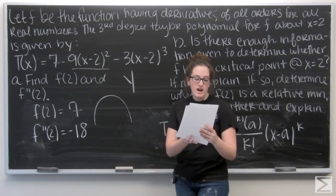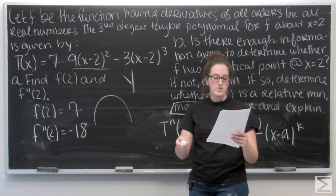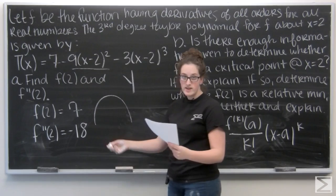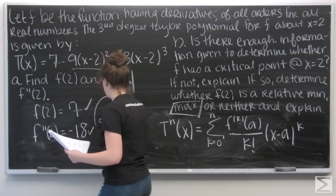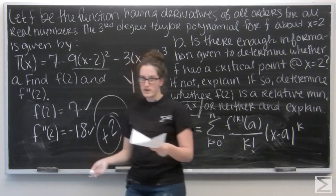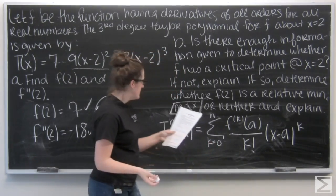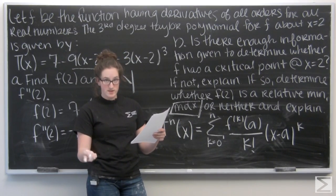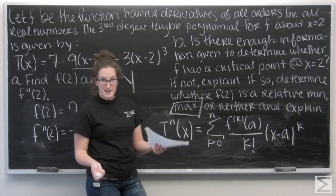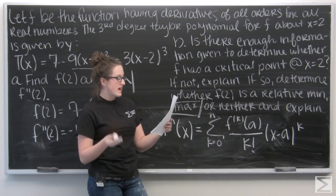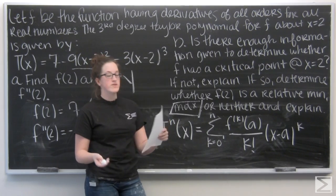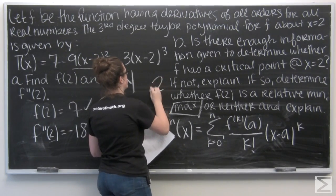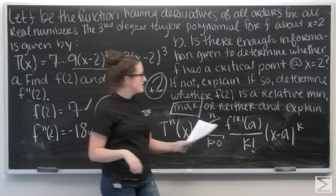So. For part a, I get two points. One for the function value and one for the value of the second derivative. And they have seven and negative eighteen. So I get two points for part a. And for b. Two points here as well. One for saying that f prime of two is zero. I did that. And another for saying that f of two is a relative maximum because the second derivative of f is less than zero. Said that one too.